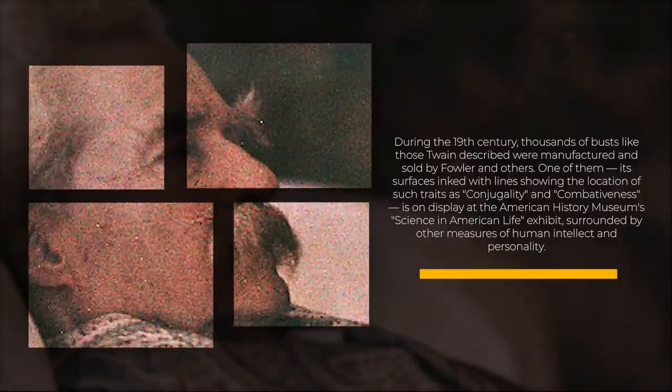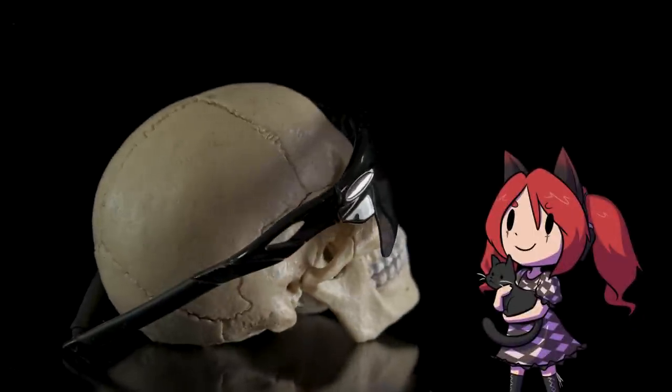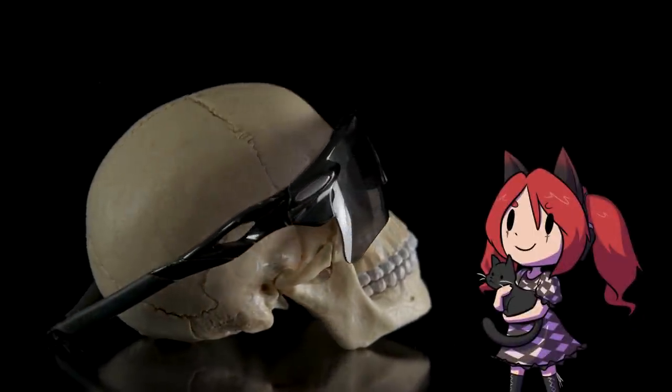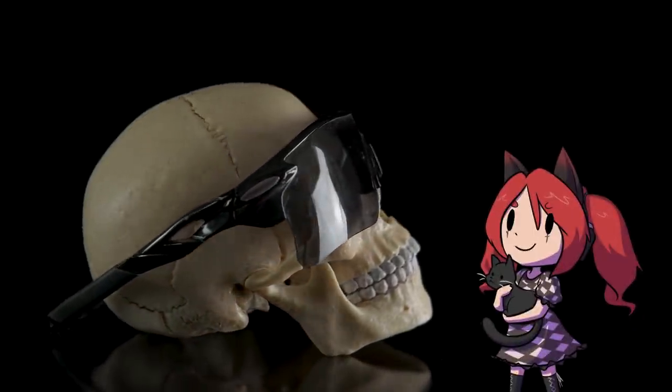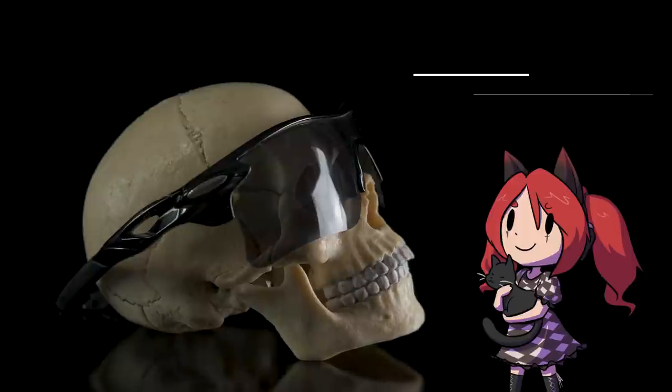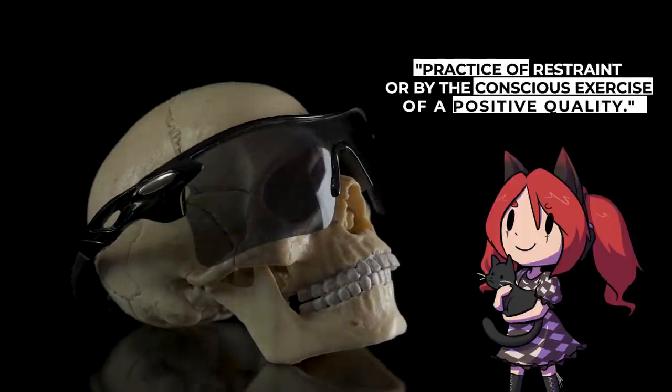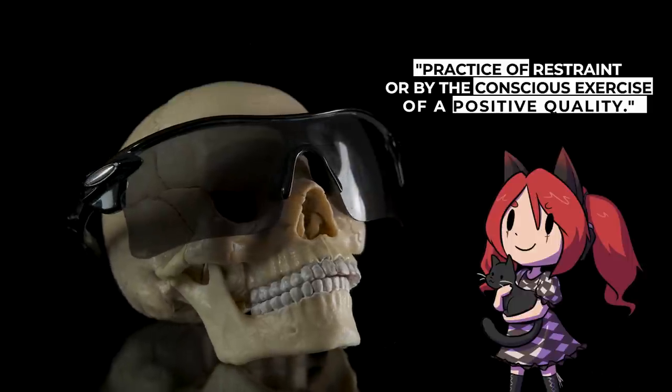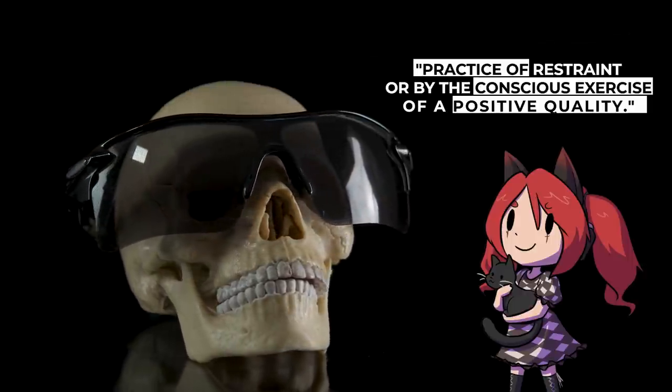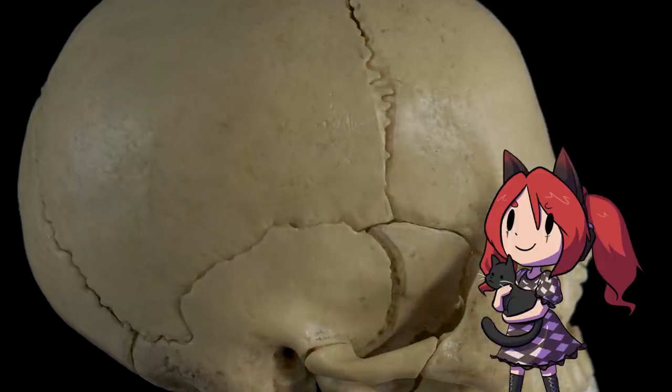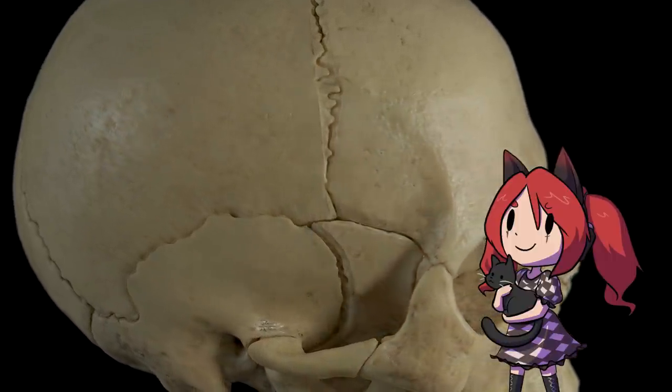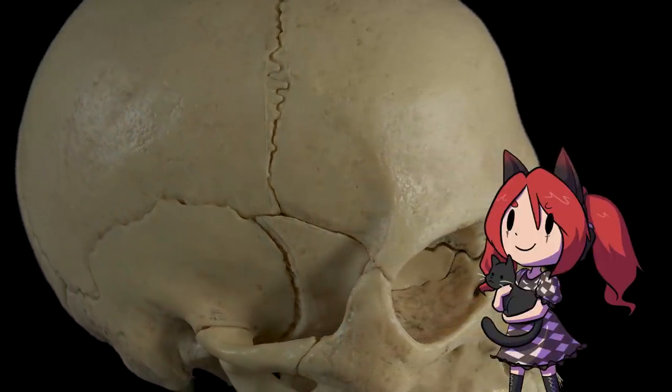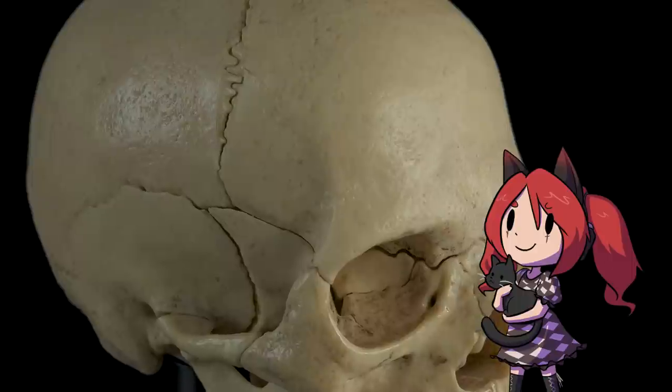Even stranger still, phrenologists also believed that these personality traits and the organs that created them could be modified through the practice of restraint or by the conscious exercise of a positive quality. So in other words, if a large protrusion in the back of your skull meant that you were irritable, you could make it go away by thinking pleasant thoughts more frequently. No thanks. If I have a large protrusion on my head, I'm heading to the doctors, thank you very much.